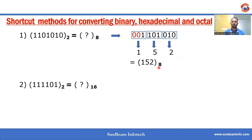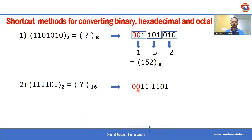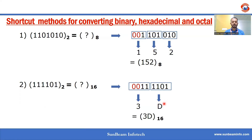For converting binary to hexadecimal, we need to make pairs of four bits. We added two zeros to make a complete group of four. Now 0011 is 3, and 1101 is 13, which means D in hexadecimal. So we have converted the binary to hexadecimal as 3D.